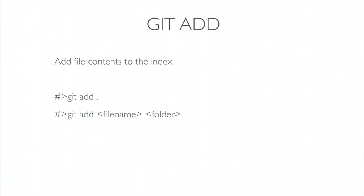The git add command adds files to the staging area. There are a few ways to do it: git add dot — the dot in command line means my current location — adds everything where you're at right now. If there's one file or 5,000 files, this adds the lot. You can also pass the file name or folder you want to add, or use wildcard characters like git add star dot css which will only add CSS files to the Git repository.